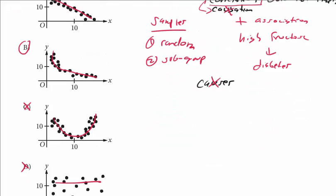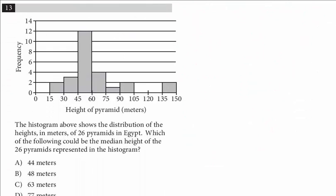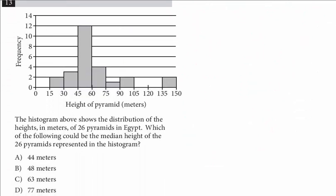And we have one more question in this video. It's number 13. It's a histogram. The histogram above shows the distribution of the heights in meters of 26 pyramids in Egypt. Which of the following could be the median height of the 26 pyramids represented in the histogram? So we're told there's 26 total. And just to review, the median is the midpoint of the distribution.